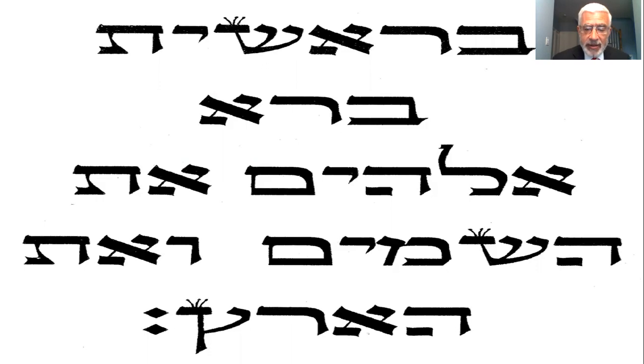You look at the verb Bara, it comes out to be 203, which is a multiple of the number seven. You look at the first and last letter of the first and last word, comes out to 497, which again is a multiple of seven. And if you look at the first and last letter of all of the words, it comes out to 1,393, again a multiple of seven. Altogether, the person who did the research, Mr. Ivan Panin, over a hundred years ago, found more than 50 combinations of the number seven.